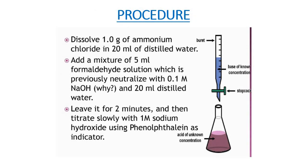What will be the procedure? Dissolve 1.0 g of ammonium chloride in 20 ml of distilled water. Add a mixture of 5 ml formaldehyde solution which is previously neutralized with 0.1 M NaOH and 20 ml distilled water. Leave it for 2 minutes and then titrate slowly with 1 M sodium hydroxide using phenolphthalein as indicator.